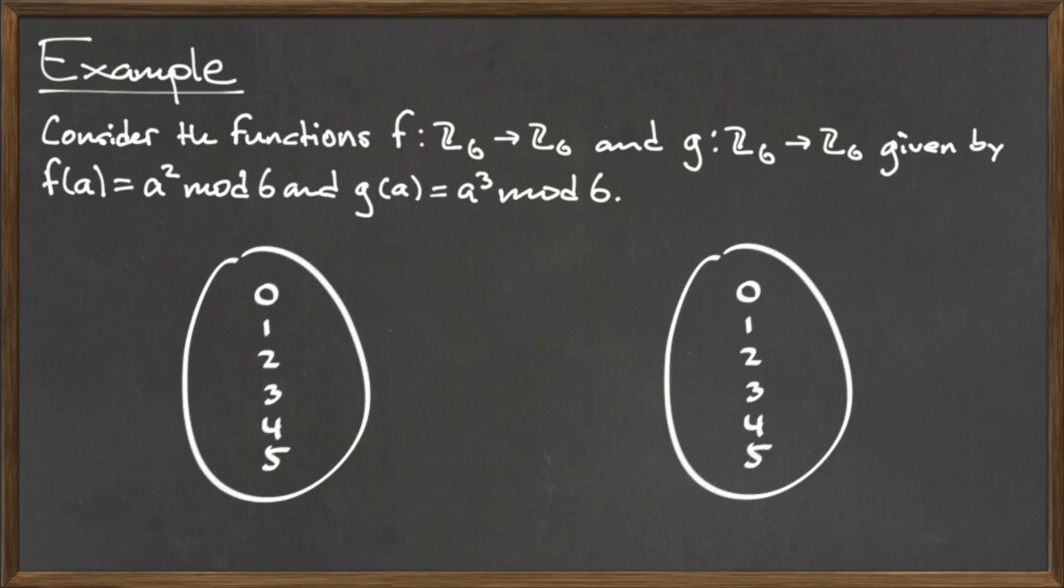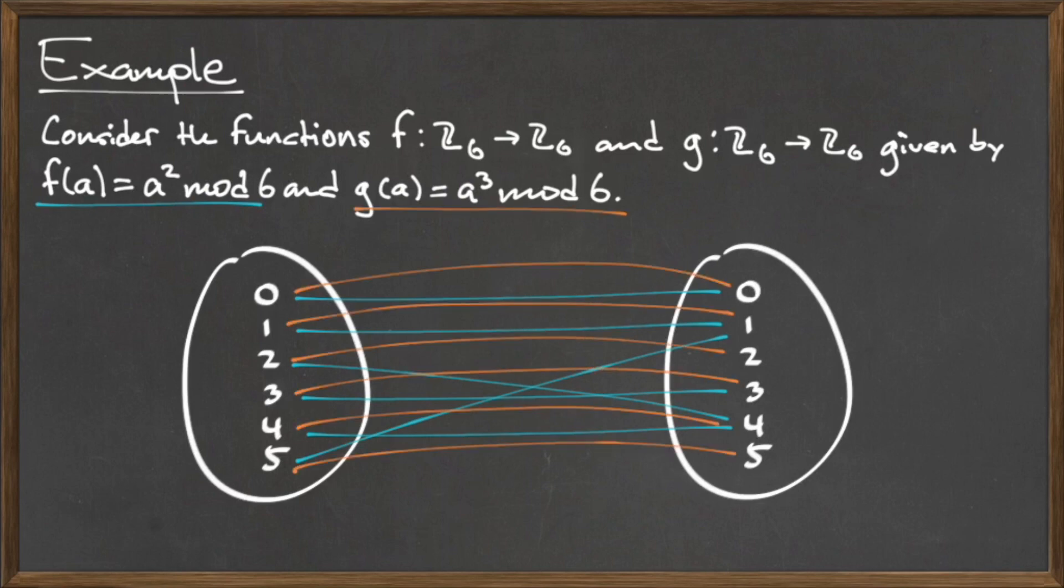To finish this diagram, we compute the image for each element under f and g, and connect the diagrams like so. Drawing diagrams like this is an effective way to visualize the relationships between elements and their images under various functions.